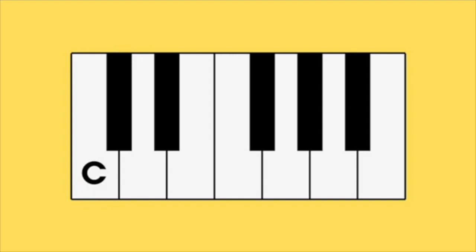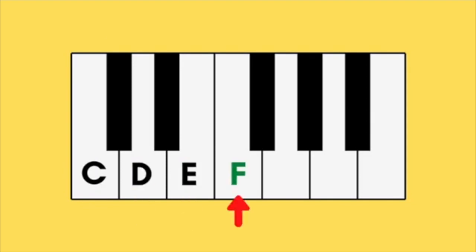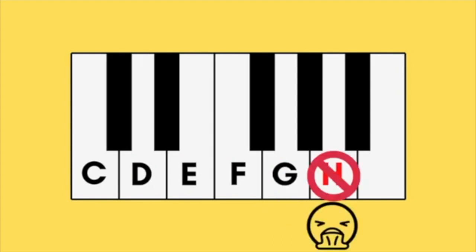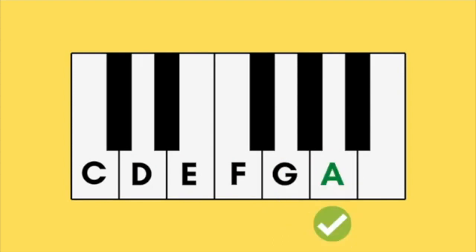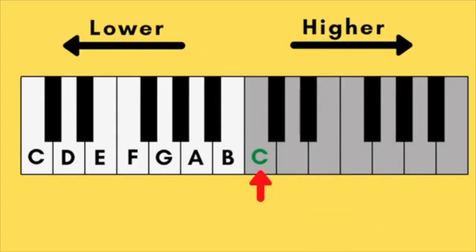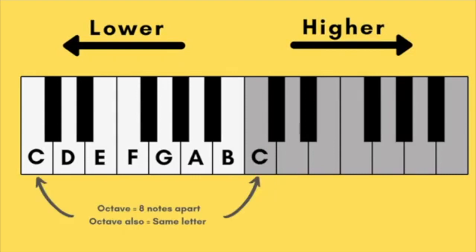From there we just go up in alphabetical order. So this is D, E, F, G. We don't use H. We actually go back to A, B, and then we arrive at C, one octave higher.